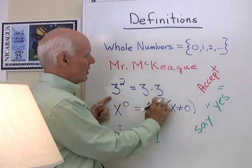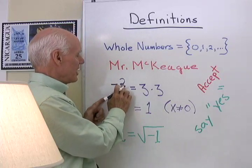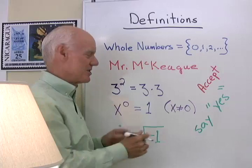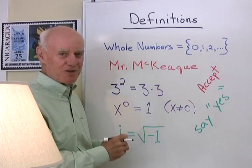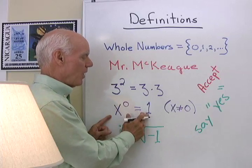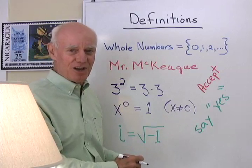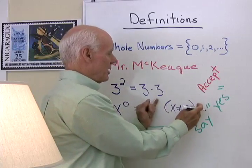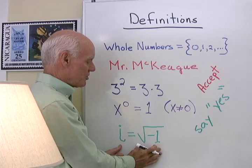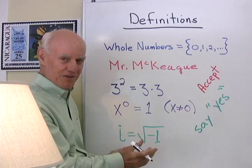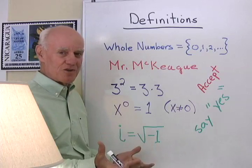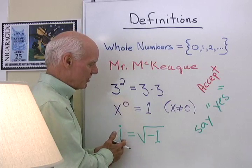Then we get to a little bit more complicated things like exponents. We say 3 to the second power means 3 times 3 — we repeat that multiplication twice, and that's the definition for an exponent of 2. We have some special exponents like the exponent 0, so we make a definition: x to the 0 is 1 for all numbers x except x equals 0 itself. As definitions get more complicated, sometimes we have to add restrictions. And then we get more abstract with things like i — the definition for the number i is the positive square root of negative 1. i isn't even a real number, because there's no real number you can square to get negative 1, so we make up this notation for it.